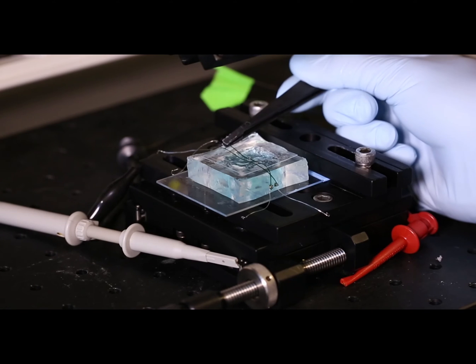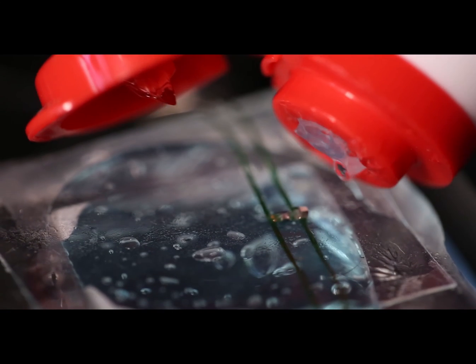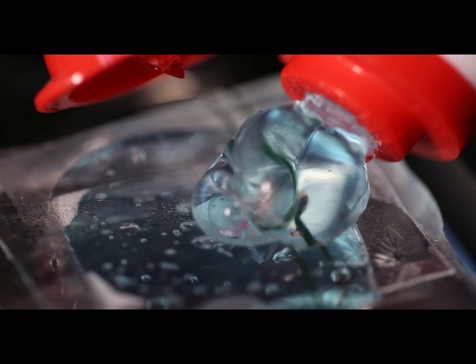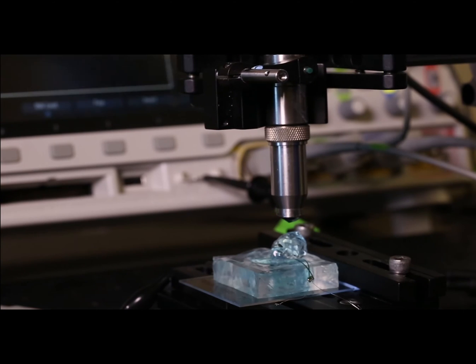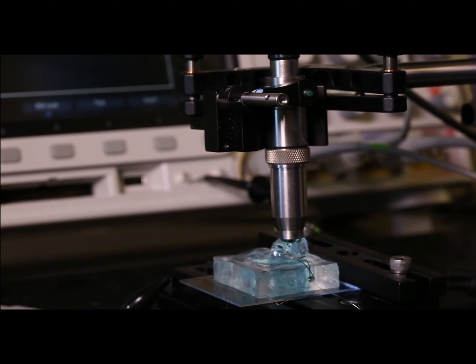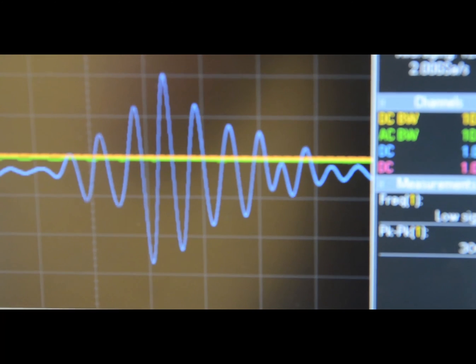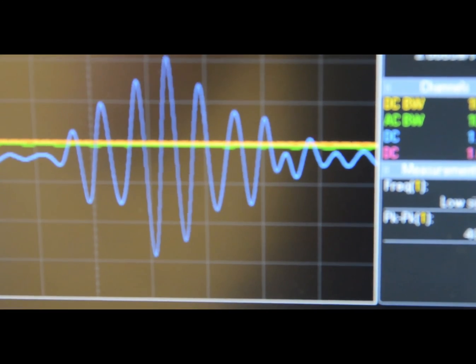Before being implanted in an animal, each fabricated neural dust implant, or mote, is tested on a benchtop setup. The mote is mounted on the acrylic stage and the transducer and the mote are fully aligned. In order to confirm backscatter communication, artificial neural signatures can be introduced into a water tank and changes in backscatter amplitude should be apparent.